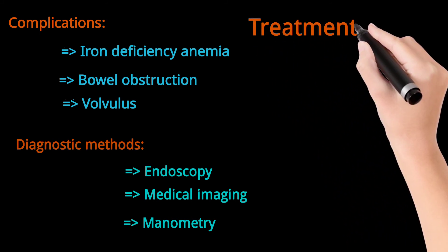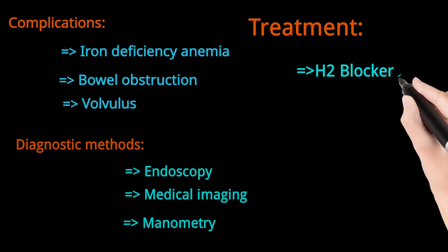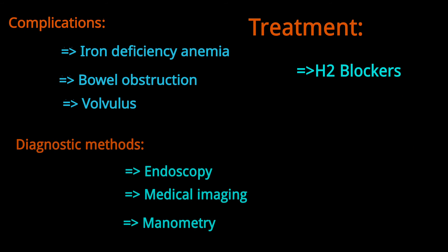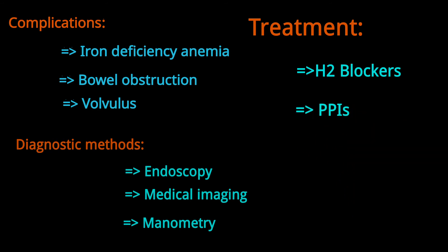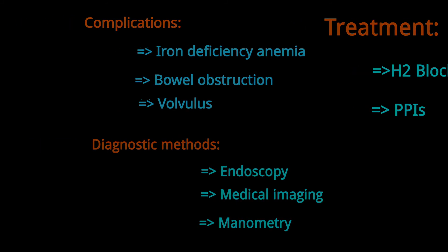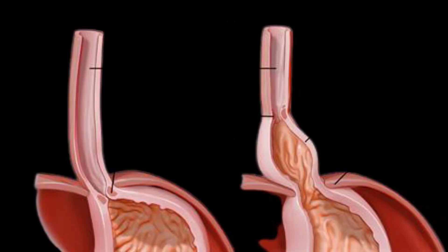Treatment for hiatal hernia includes H2 blockers as supportive treatment. H2 blockers include ranitidine, famotidine, nizatidine, and cimetidine. Proton pump inhibitors, which include lansoprazole and omeprazole, are also used.